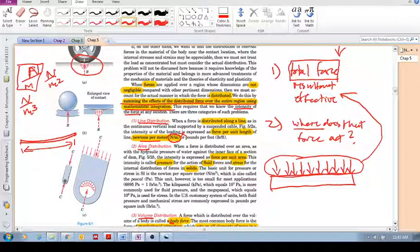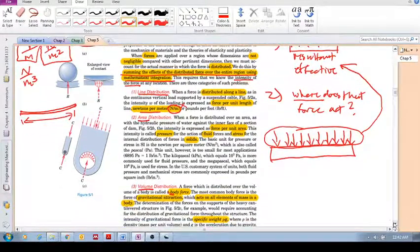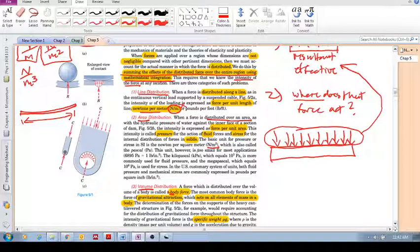Similarly with area, we've got now Newton per meter squared. This is a force distribution over an area, given by Newton per meter squared. For fluids, this is called pressure. And for solids, it's called stress. This is the internal distribution of forces in solids. This is a more advanced topic.